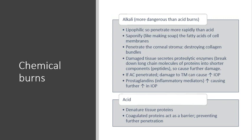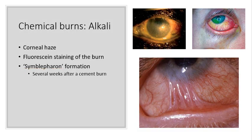Acid burns will denature tissue proteins, and these coagulated proteins act as a barrier and prevent further penetration. This is quite different to alkali — alkali tends to really seep into the eye, whereas acid affects the eye but doesn't penetrate right down into the deeper structures. Here are some images of alkali burns. The top left image shows a corneal haze caused by the substance. Fluorescein staining is the investigative technique used here, and the fluorescein has pooled at the area of the chemical burn. Down the bottom, we've got symblepharon formation, which has occurred several weeks after a cement burn.